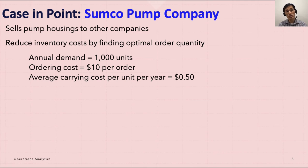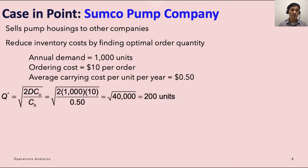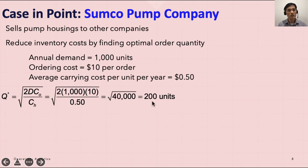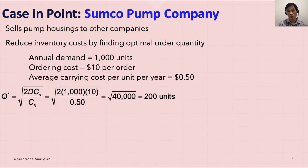EOQ equals the square root of 2 times annual demand times annual ordering cost (CO), divided by CH, the average carrying cost per unit per year. Plugging in the numbers — 1,000 units, $10 ordering cost, and $0.50 carrying cost — and taking the square root gives us 200 units for EOQ. This means you should order 200 units at a time.